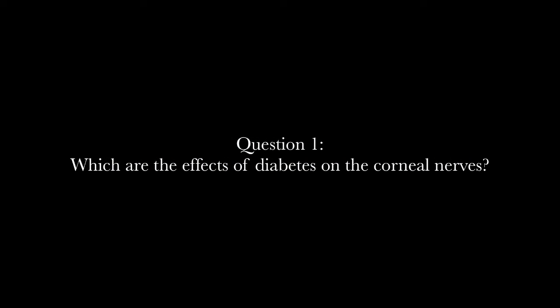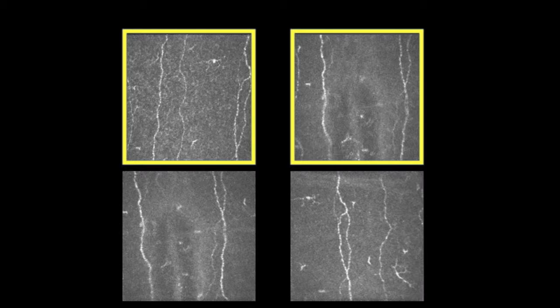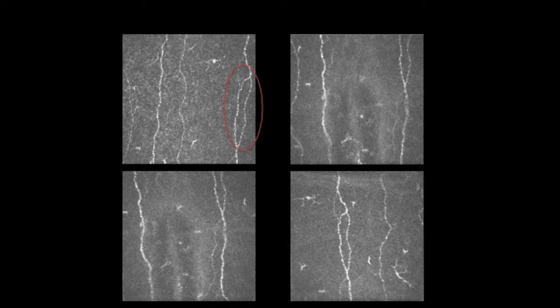The next logical step is to quantitate the amount of corneal neuropathy. Here we have four slides, two from a normal patient and two from a diabetic patient. Most people choose the upper two as normal and the lower two as diabetic, for the obvious reason that there are four and three nerves on the upper slides and only two on the lower. However, a closer look reveals a similar structure present in all four — this is actually all from the same patient, with some photos to the left or right of the nerve loop. This is an excellent example of how sampling error can affect corneal nerve quantitation.